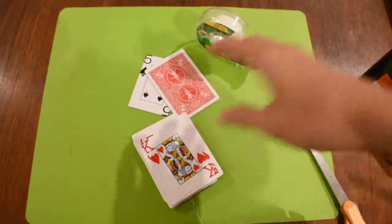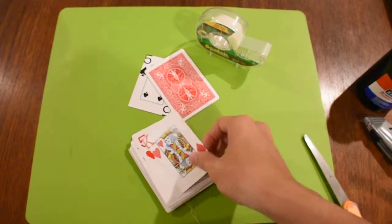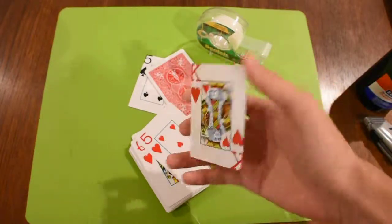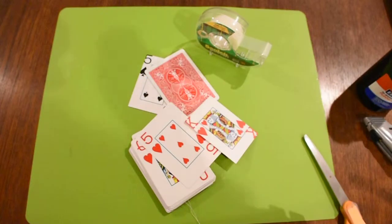So that's how to do Sleeper by Owen O'Hare on Theory 11. This is a free tutorial, you're welcome. See you guys next time. Alright, bye.